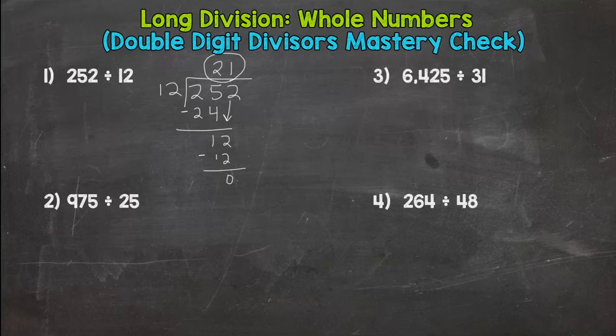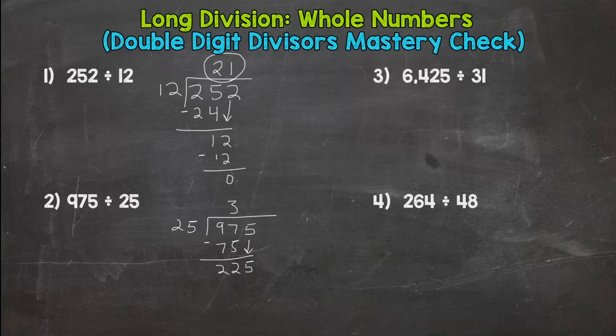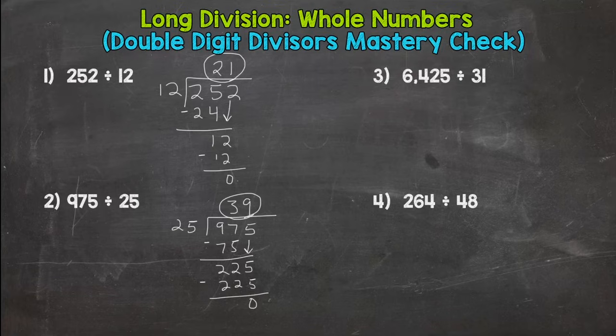Number two, we have a divisor of 25 and a dividend of 975, nine hundred seventy five. So how many whole groups of 25 can we pull out of 97? That would be three. Three times 25 is 75, subtract we get two. Nine minus seven is two, bring down my five here. 225 divided by 25 is nine. Nine times 25, we hit 225 exactly. So remainder of zero, you should have 39 for number two. So hopefully two for two. If not, hopefully you're seeing where your mistakes are or where you are getting held up at.